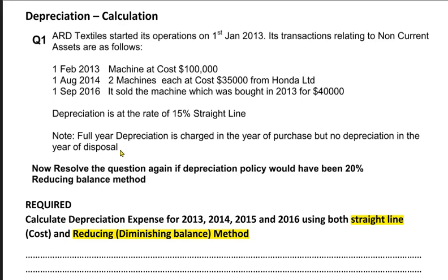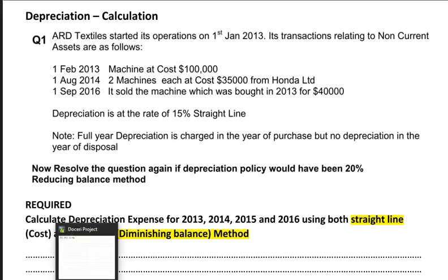In the full year policy, no depreciation is charged in the year of disposal. Even if the asset was used almost the entire year — say sold on 30th December — no depreciation is charged that year. The month-wise policy, covered in later videos, charges depreciation for the number of months the asset was actually used. In this question, the examiner clearly states a full year policy at 15% straight line.